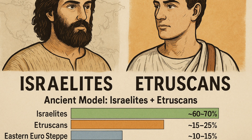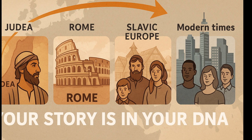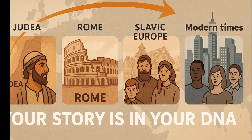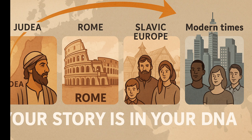What stood out to me most was how these tools worked together. ChatGPT helped me build and interpret the data set with historical context, while Vahaduo turned that data into clear visual models and percentages. Together, they showed a powerful story — one of continuity from the ancient hills of Judea, through the Roman Empire, into medieval Europe, and right up to today.